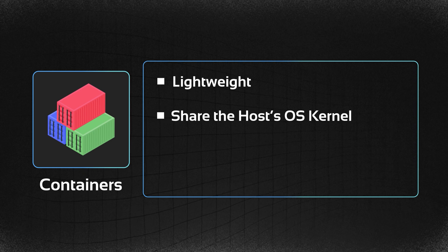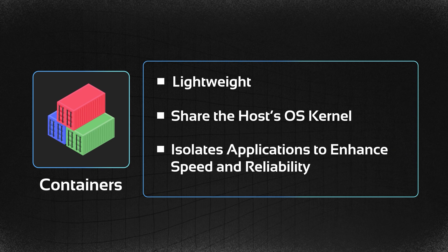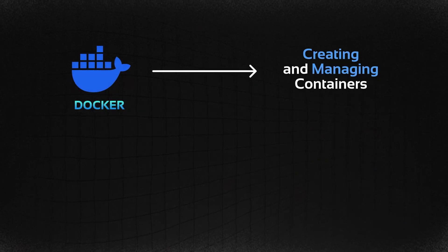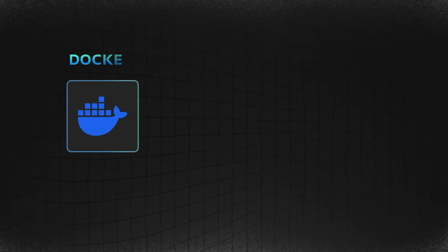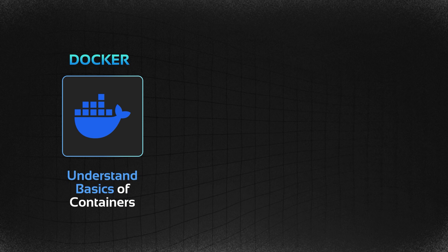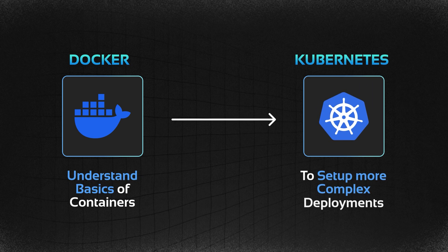Containerization — knowing containerization is vital for DevOps engineers. Unlike virtual machines, containers are lightweight, share the host OS kernel, and isolate applications, enhancing speed and reliability. Learning to utilize Docker for creating and managing containers, and Kubernetes for orchestrating those containers, is crucial. This skill set ensures applications run smoothly in any environment, streamlines the deployment process, and supports scalability. Start with Docker to understand the basics of containers, then move on to Kubernetes for more complex deployments. Don't skip out on learning containerization.